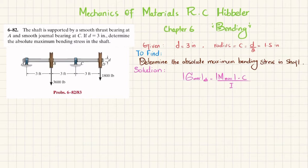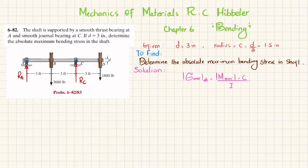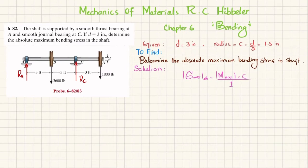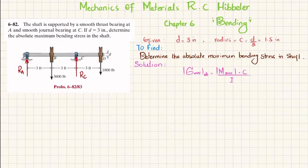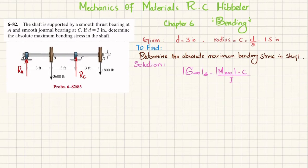The first step: if you remove the smooth thrust bearing at point A, you will have a reaction force represented as R_A. If you remove the smooth journal bearing at point C, you will have a reaction force R_C exerted by the bearing on the shaft. We will find R_A and R_C using equations of equilibrium. The first equation is that the sum of all moments about point C must equal zero, taking counterclockwise moment as positive.